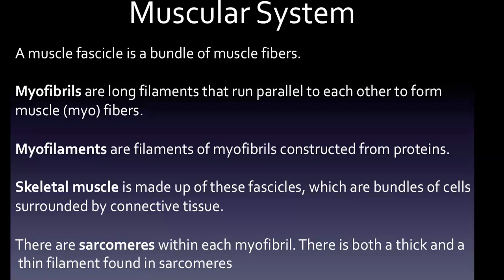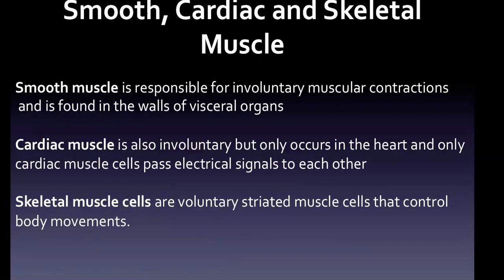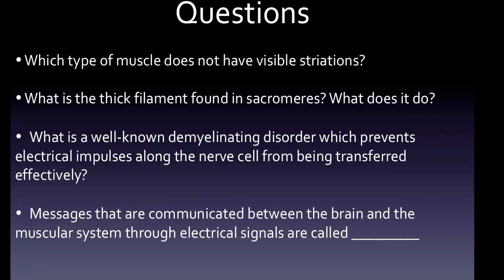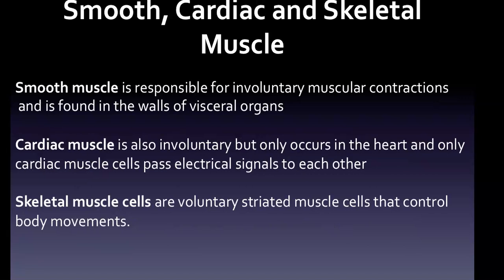There is both a thick and a thin filament found in sarcomeres. The thin filament is actin and the thick filament is myosin. Actin serves as the anchor point for myosin, which contracts and pulls actin closer together, shortening the sarcomere during muscle contraction. So the thick filament in sarcomeres is myosin, and the thin filament is actin.